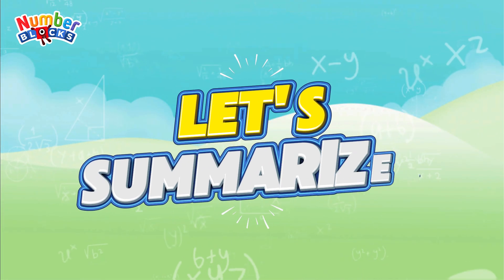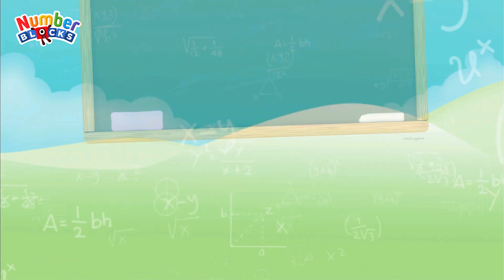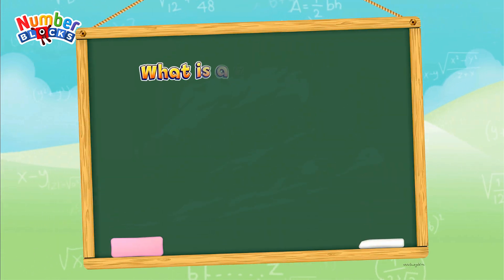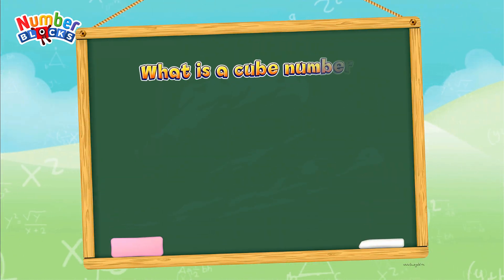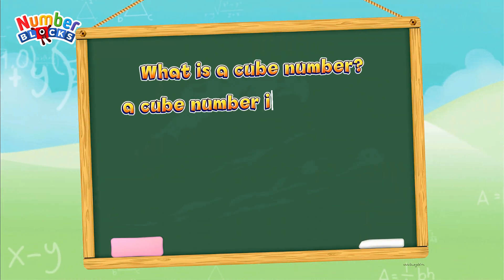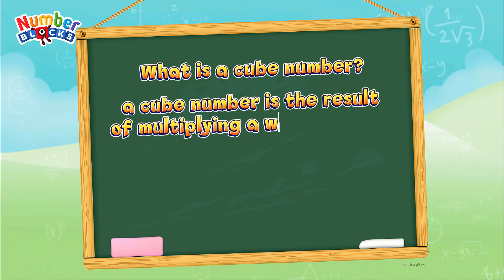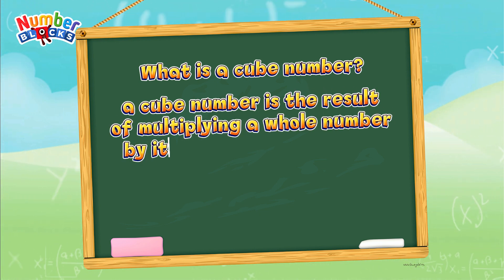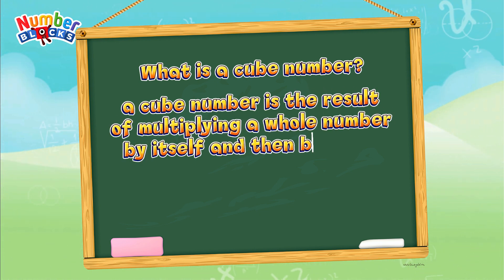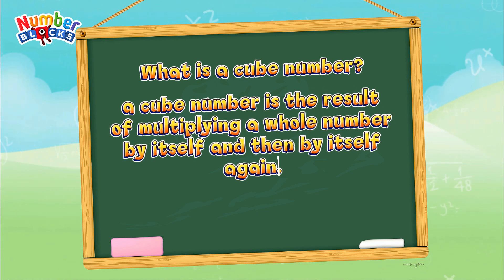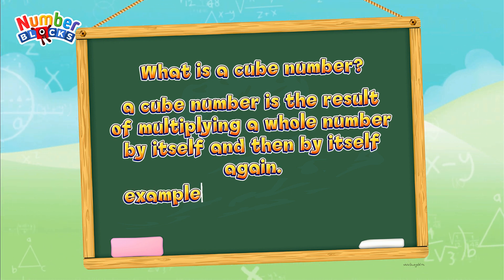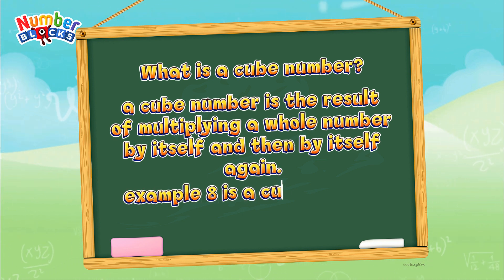Let's summarize. What is a cube number? A cube number is the result of multiplying a whole number by itself and then by itself again.